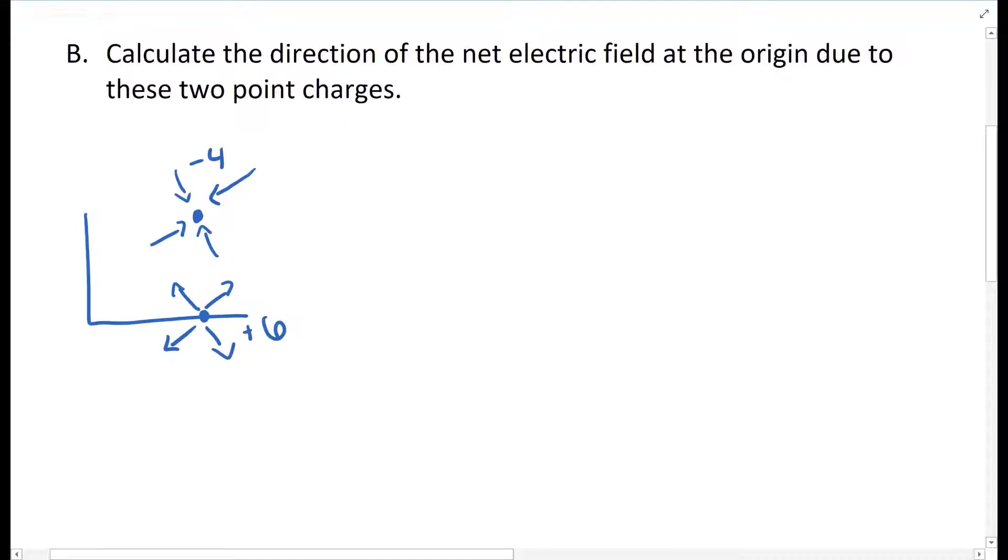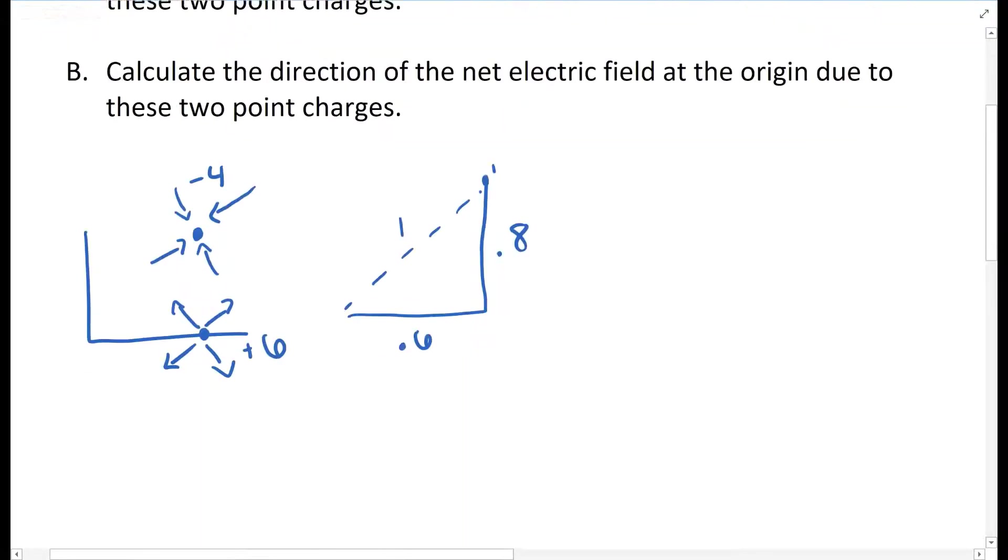This one's a negative 4 charge, and this one is a positive 6 charge. It's 0.6, and this is 0.8. So this length right here, if you go ahead and do the Pythagorean theorem, you're actually going to find it's 1.